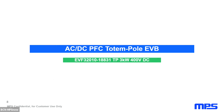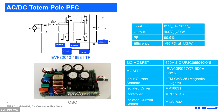Going in more detail on the specifications of the reference design we have developed: we have a wide input range from 85 to 265V, so we can cover US and EU application markets. The output is single phase, 400V DC with three kilowatts total power. The power factor we can achieve with this solution is above 99.5%, and efficiency is very close to 99% at mid-power.